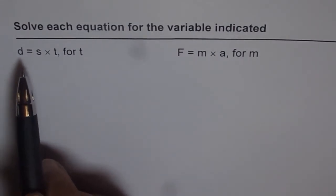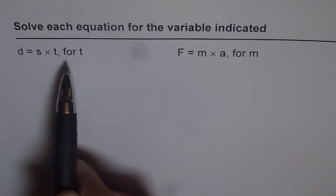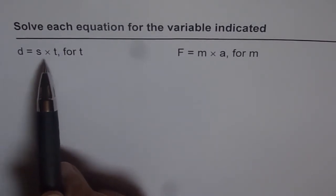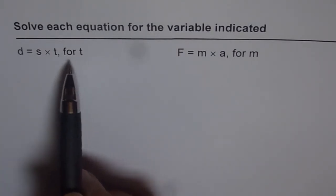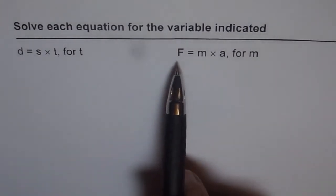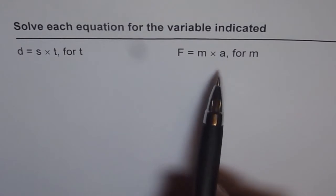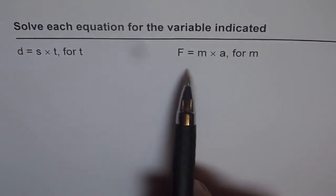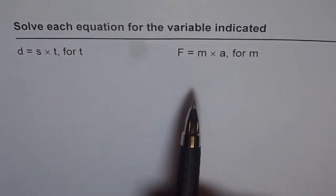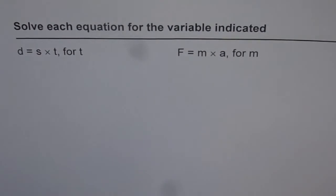First one is d equals s times t and you need to solve for t. This is a common relation which we use for distance equals speed into time, and solving for t means you can relate time with distance and speed. And here is the second one which is F equals m into a and we need to isolate for m. F is the force equals mass into acceleration. Using this formula we relate the three quantities which are mass, acceleration and force. Now you can copy these and then isolate for the variable and then look into my suggestions.